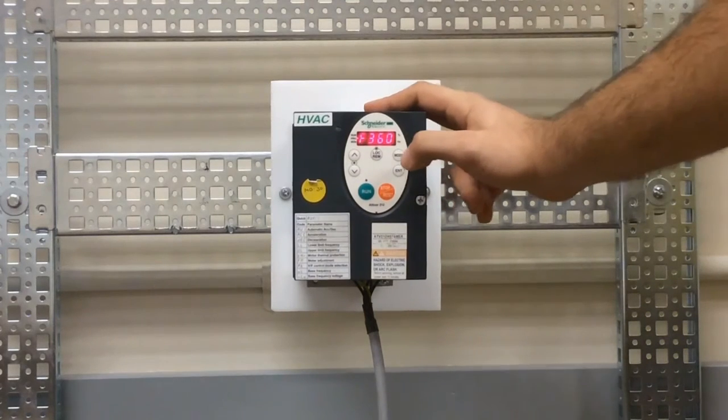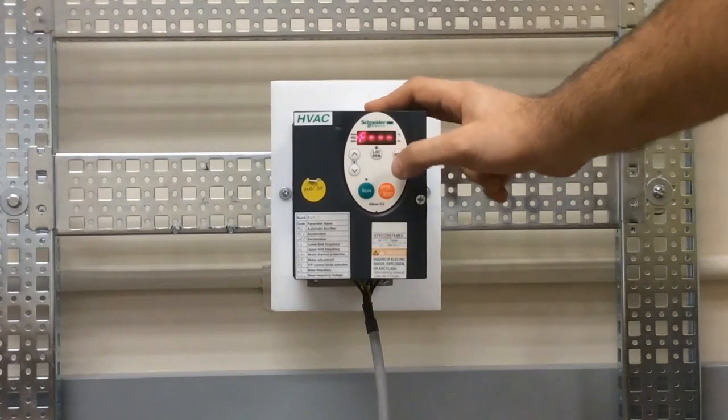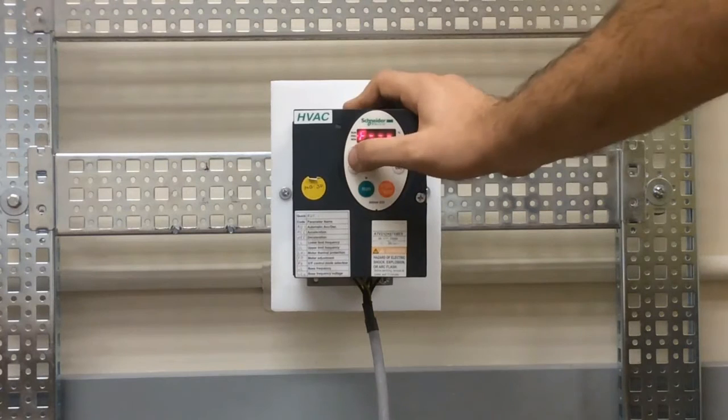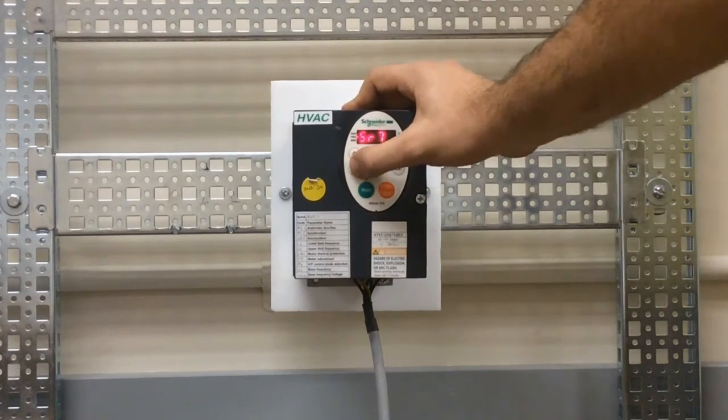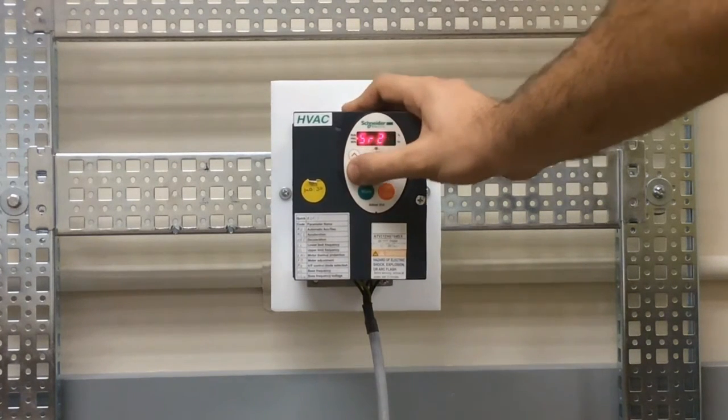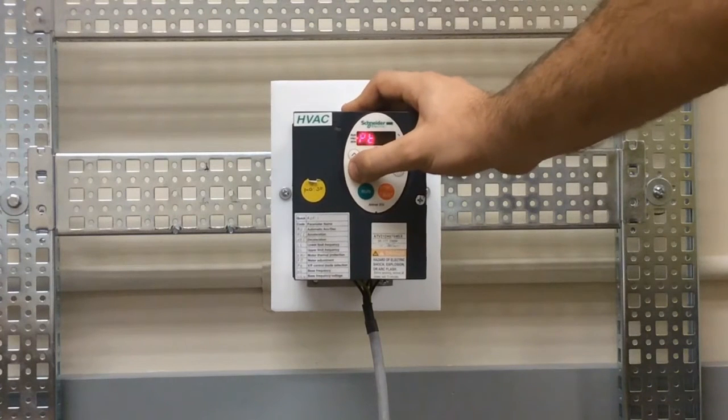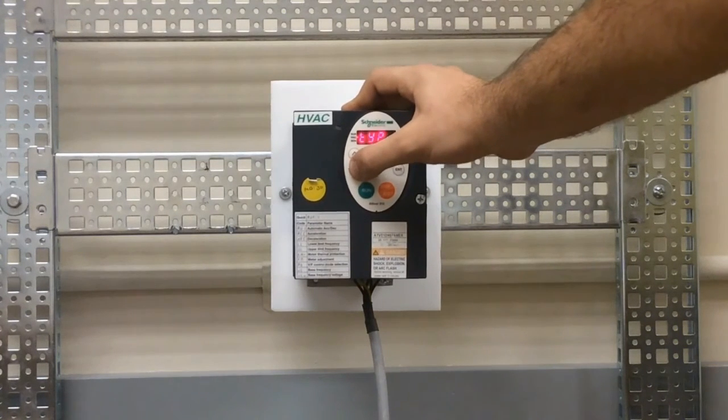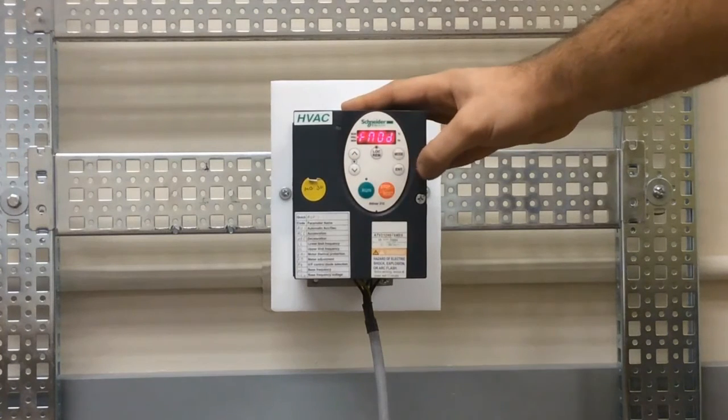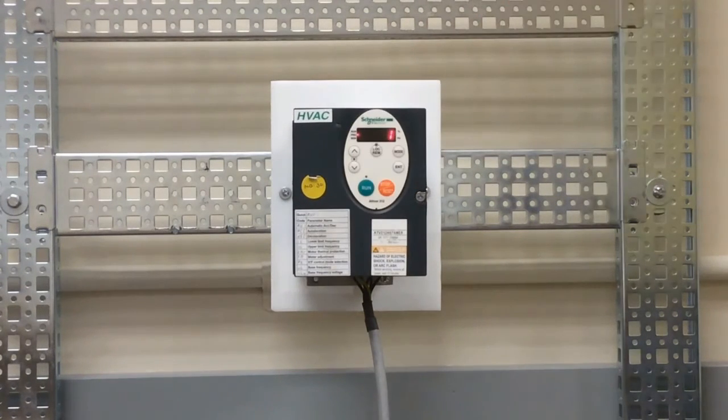To do this from this menu, you press mode to go back to F dash dash dash. Then you have to hit the down arrow key until we get to FNOD. Once we're there, we press enter. Currently, FNOD is set to one, which is default.